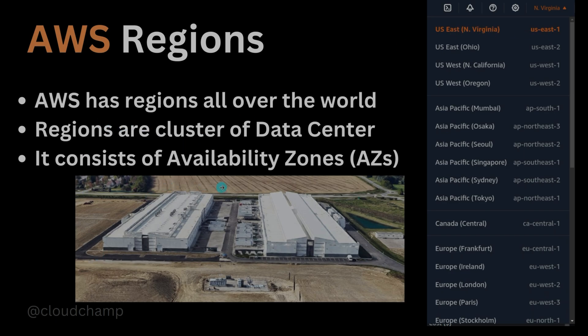Regions consist of data centers. Here is an image of a data center inside the Oregon region — regions are a cluster of data centers. Inside a region, there will be multiple availability zones. For example, North Virginia has six different availability zones.